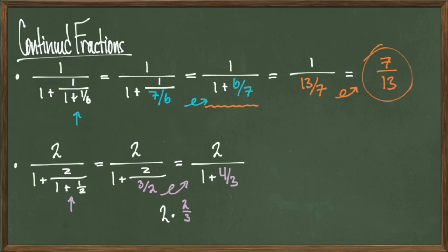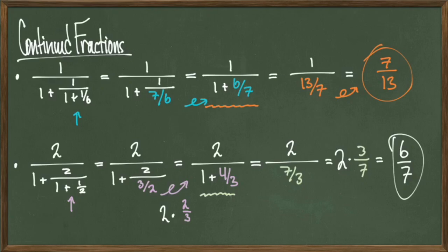Next, I can add 1 and 4 thirds together to get the new quantity 2 over 7 thirds. Lastly, the 7 over 3 comes out and flips upside down, giving us 2 times 3 over 7 with a final answer of 6 over 7.